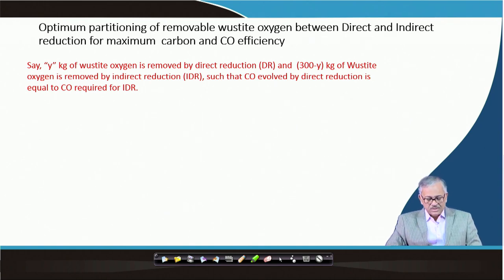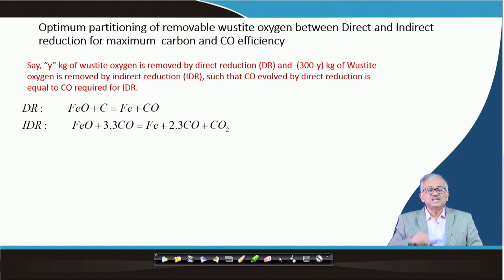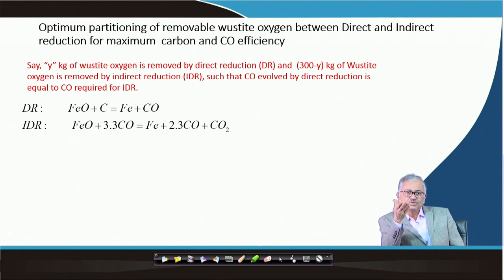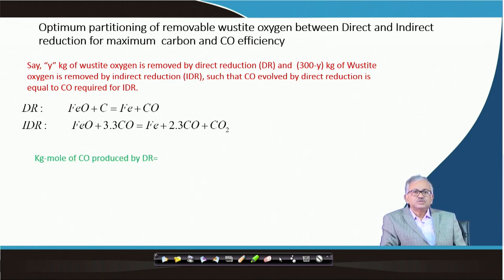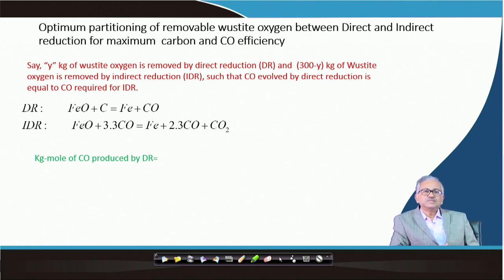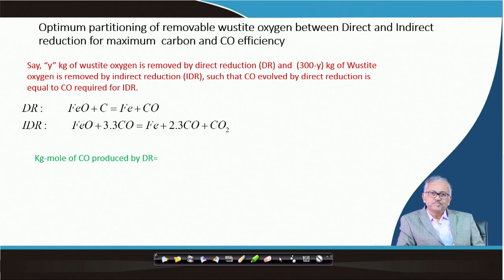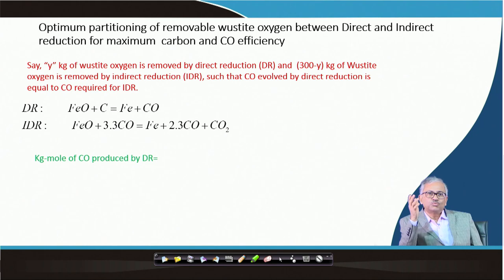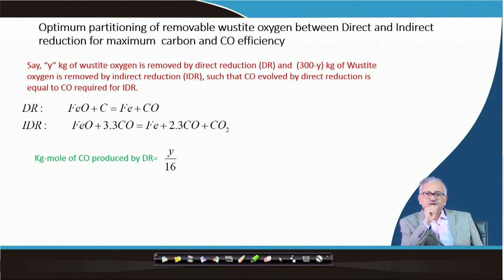Direct reduction is FeO + C → Fe + CO, and indirect reduction equilibrium reactions as given. If y kg of wustite oxygen is removed directly, then y/16 kg-moles of oxygen is removed directly. To remove 1 mole of oxygen by direct reduction, 1 mole of CO is produced. So y/16 kg-moles of CO is produced. Thus, kg-moles of CO produced by direct reduction = y/16.